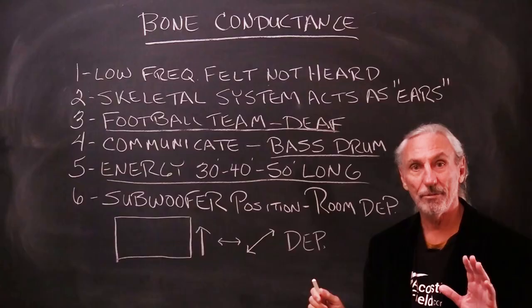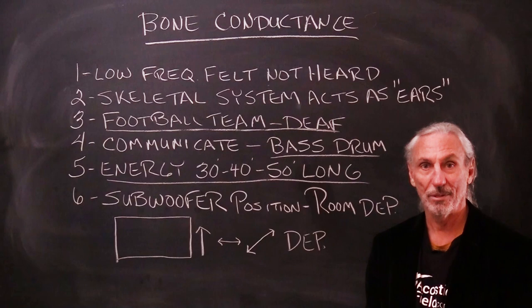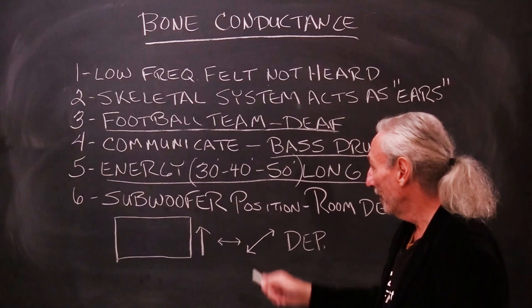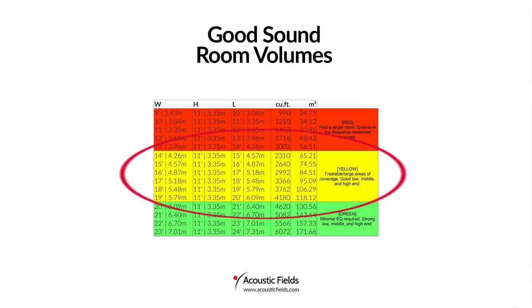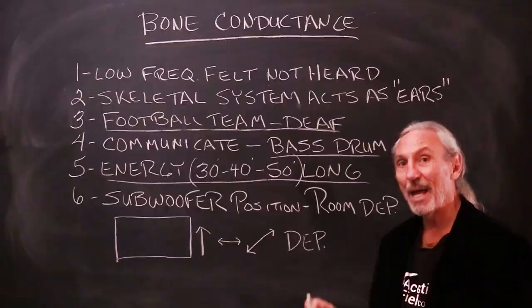Remember, we're dealing with energy that's 30, 40, 50 feet long. It's not going to fit in our rooms. A lot of you try to figure out how to make it work, but it's not going to, because you just can't get dimensions in your room that are multiples or the equivalent of these wavelength lengths. You're never going to be able to do it. You have to manage it as best you can and live with the results — that's the whole key. You manage it through treatment, obviously.